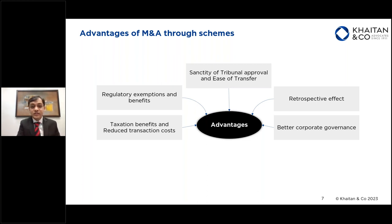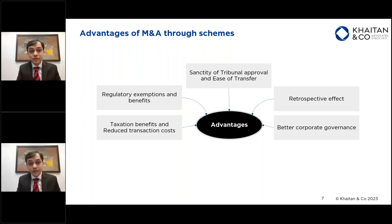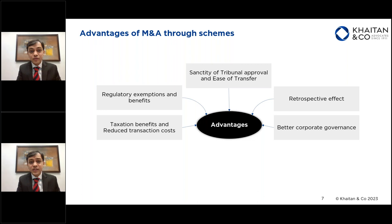Another advantage of doing a scheme is to give retrospective effect to a transaction. Under a scheme, there is a provision that you can specify an appointed date from which the transaction will take effect. For example, if you have an appointed date of 1 April 2022 in the scheme of arrangement, once the transaction is approved by the tribunal and all approvals are in place, accounting for that can happen from 1 April 2022. So retrospective effect can also be designed in the scheme of arrangement.